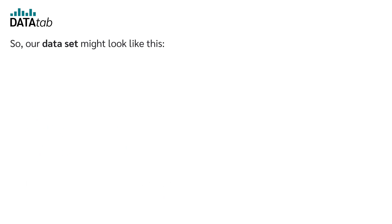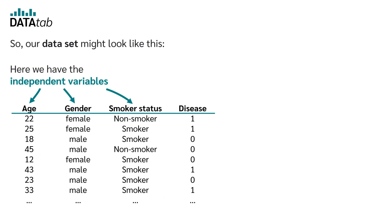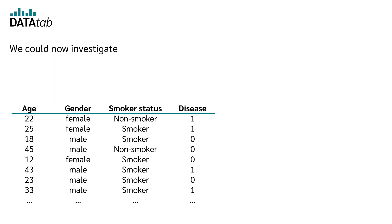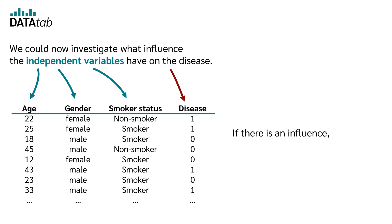So our dataset might look like this. Here we have the independent variables age, gender, smoker status and here the dependent variable with 0 and 1. We could now investigate what influence the independent variables have on the disease. If there is an influence, then we can predict how likely a person is to have a certain disease.